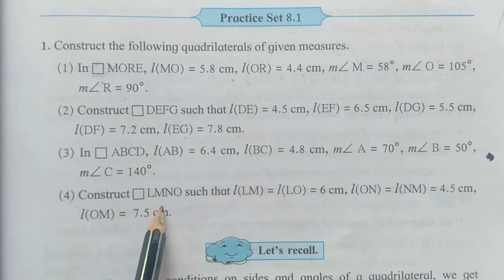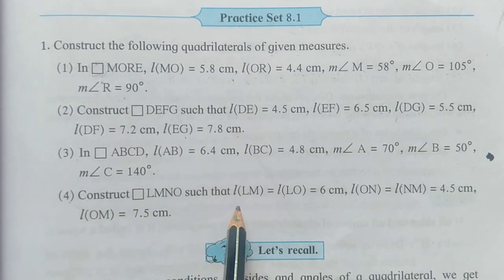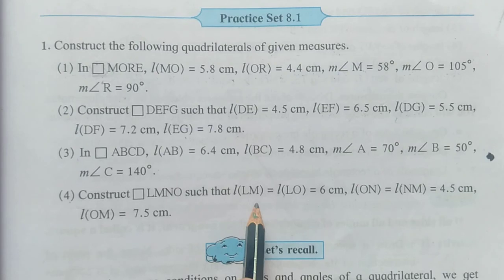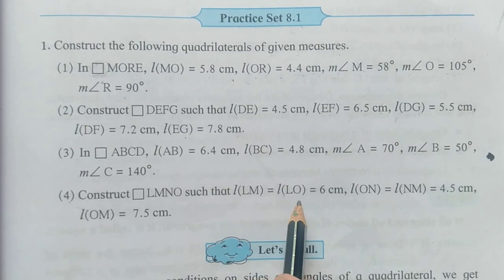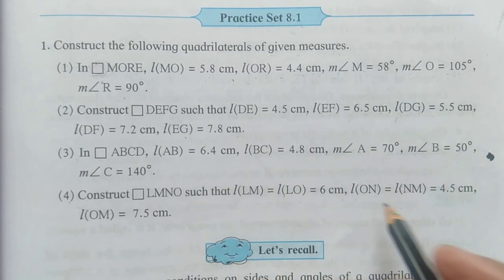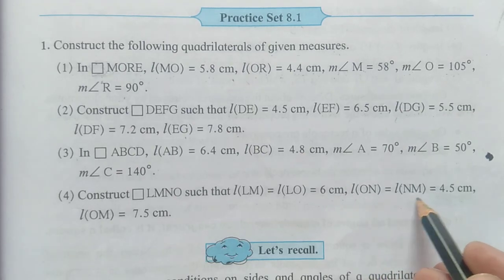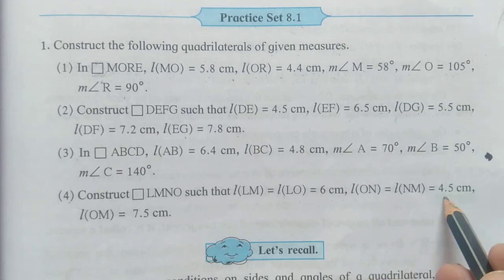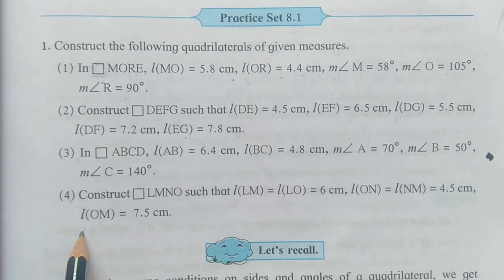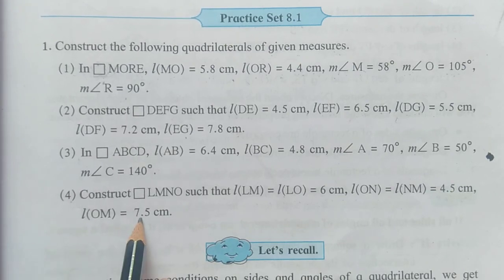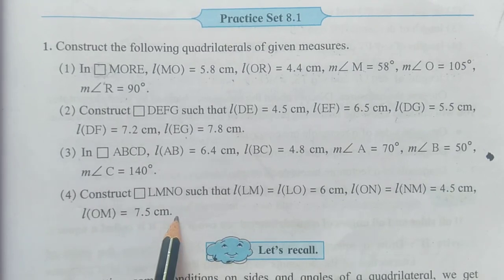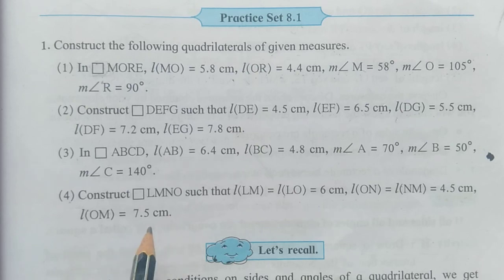Construct quadrilateral LMNO such that length of LM is equal to length of LO is equal to 6 cm, length of ON is equal to length of NM is equal to 4.5 cm, and length of OM is equal to 7.5 cm. Firstly we will draw the rough figure according to the given labels and measurements.